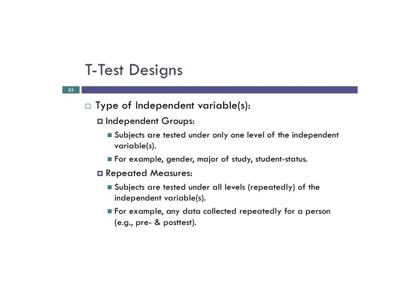Focusing down at the bottom half — repeated measures — subjects are tested repeatedly under all levels of the independent variable, typically a pre-test and a post-test, although you could have people tested in the same or multiple conditions. For instance, if you wanted to test their level of satisfaction when drinking Coca-Cola versus Pepsi, that's not a pre-test versus a post-test, but you'd have them as their own control.